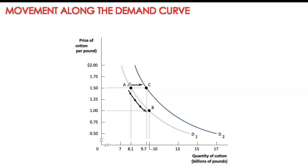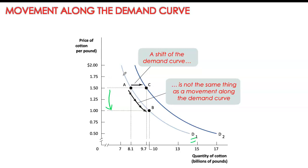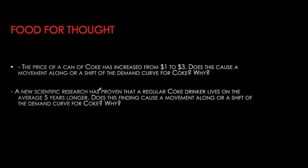A lot of students confuse a movement along the curve versus a shift of the curve. When we have higher quantity demanded because of a decrease in price, this is referred to as a movement along the curve. The demand curve and demand schedule are exactly the same as before — I'm still working with D1, but because of the lower price, quantity demanded is higher — we are moving from A to B. A shift in the demand curve is when price is the same, say $1.50, but quantity demanded is correspondingly higher.